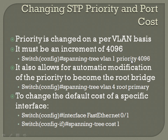To change the default cost of a specific interface — for whatever reason you want a lower or higher cost — first enter interface configuration mode, for example 'interface fast ethernet 0/1'. Then the command is 'spanning-tree cost [value]'. Remember, lower costs are preferred over higher costs.